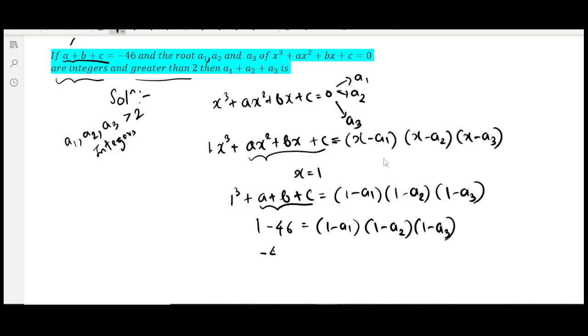So -45 is a multiple of three integers because a1, a2, a3 are integers. We can write -45 as -5 × 9, which is 3 × 3 × something. If we consider a1 < a2 < a3, then 1 - a1 would be greatest.